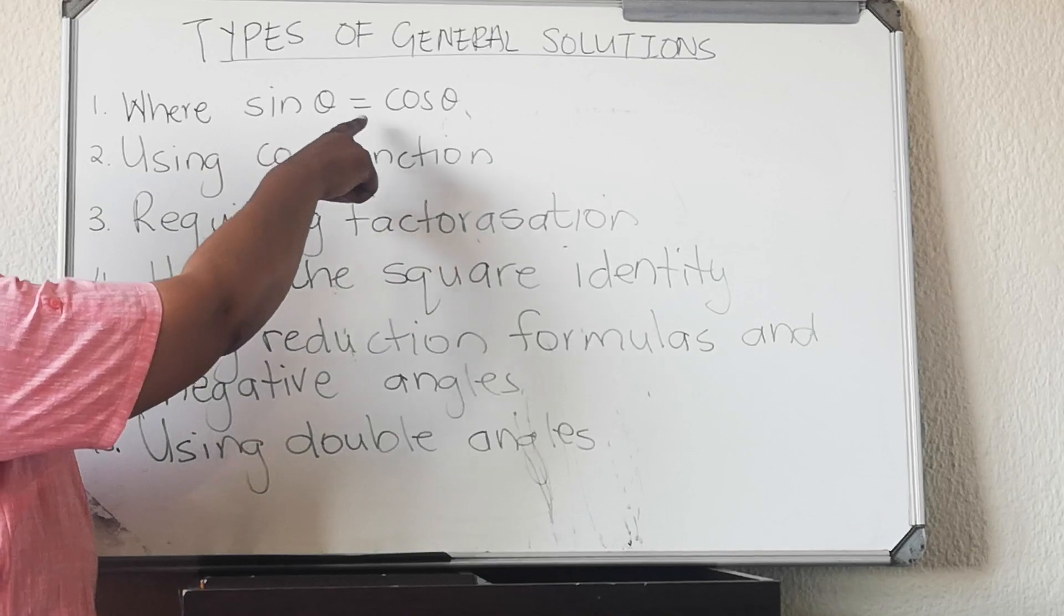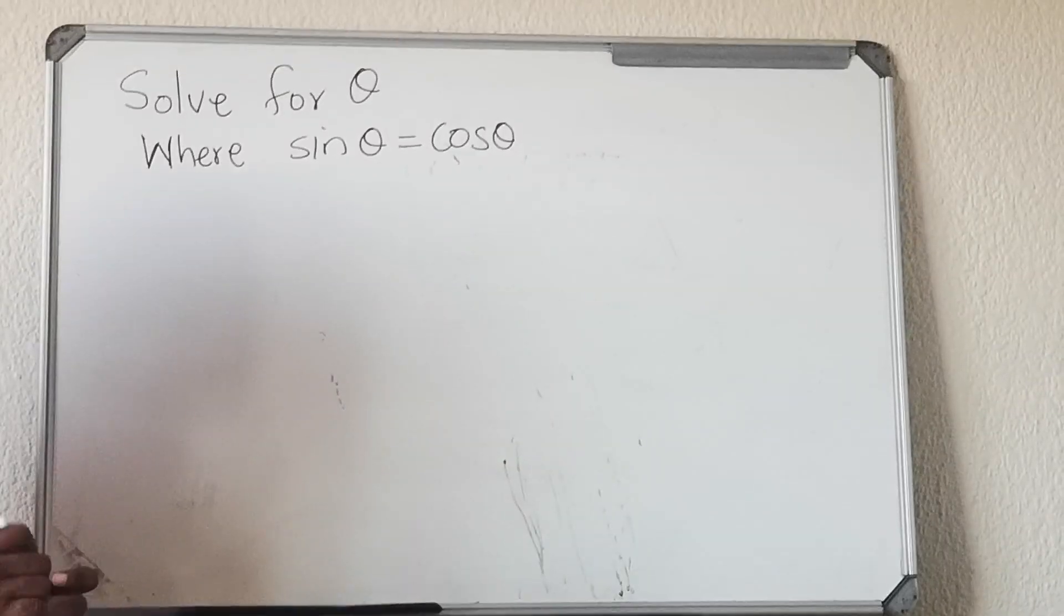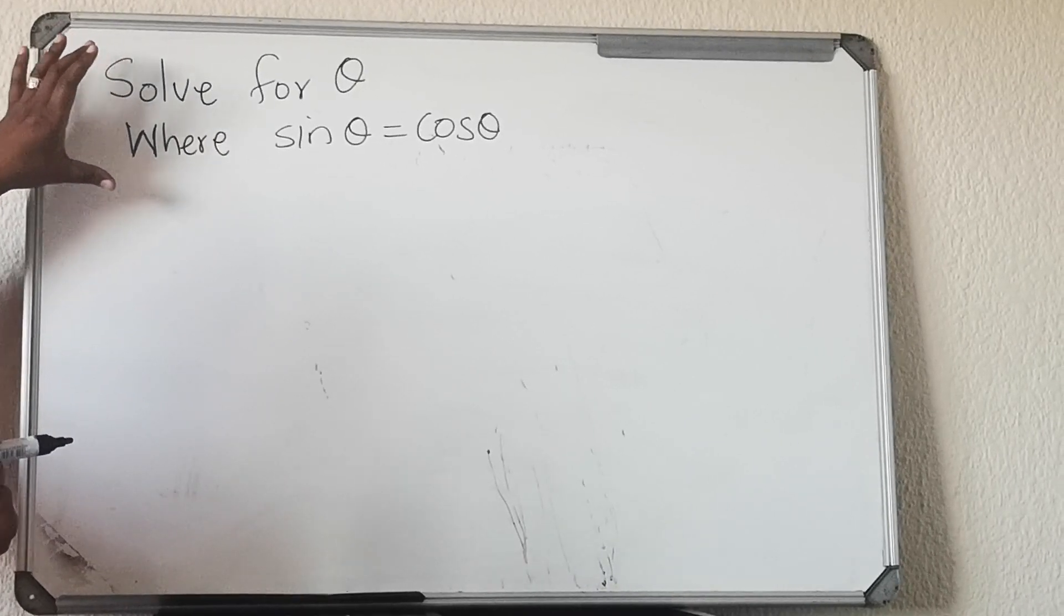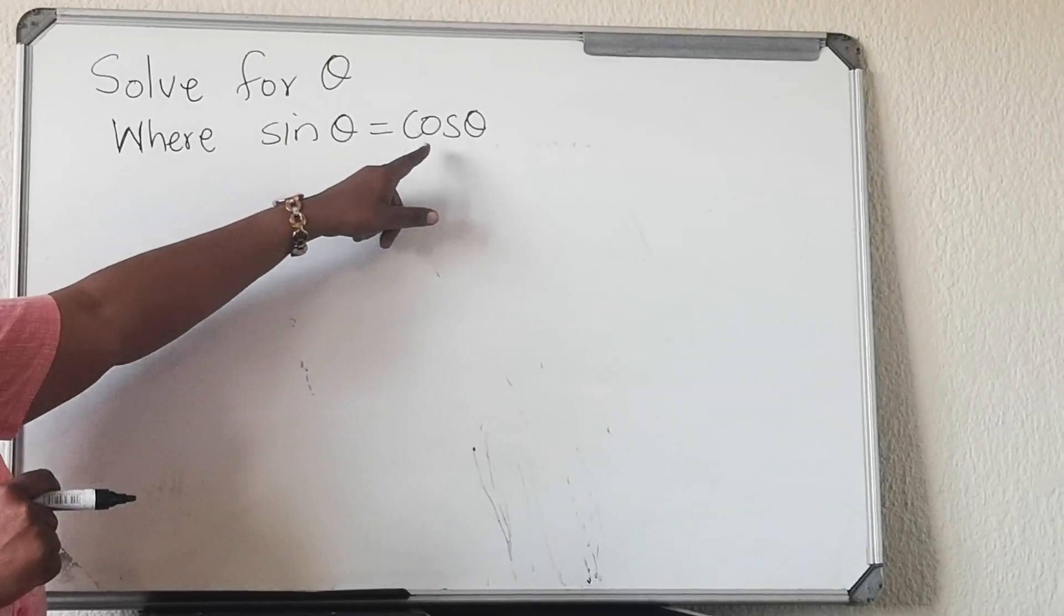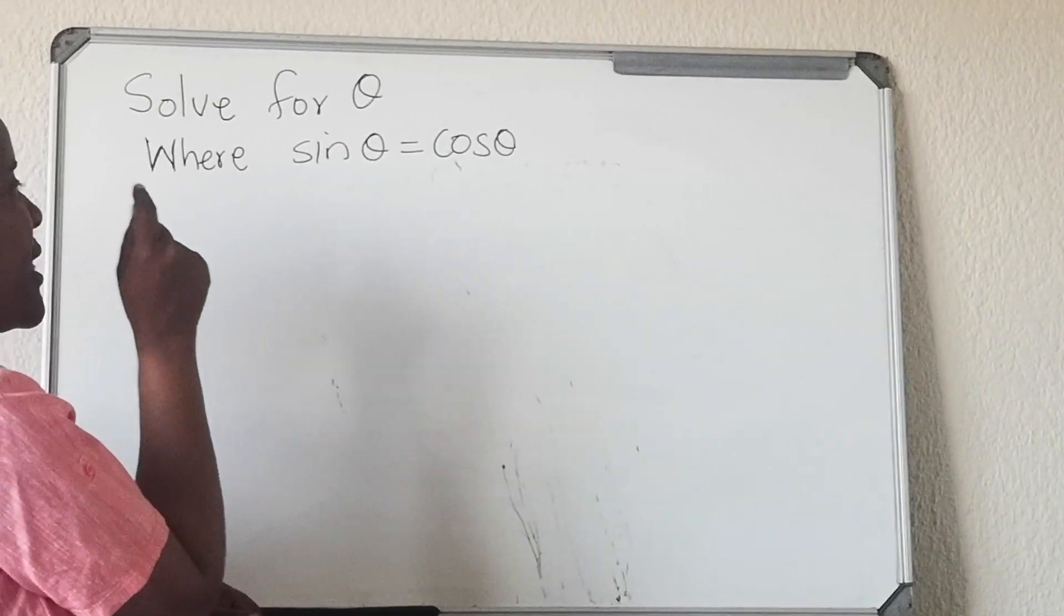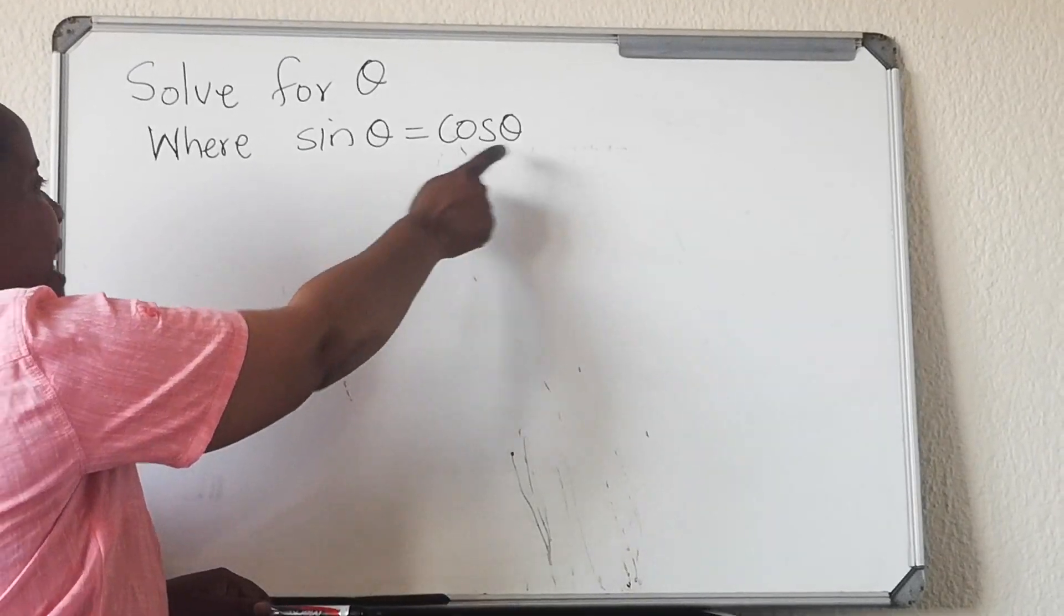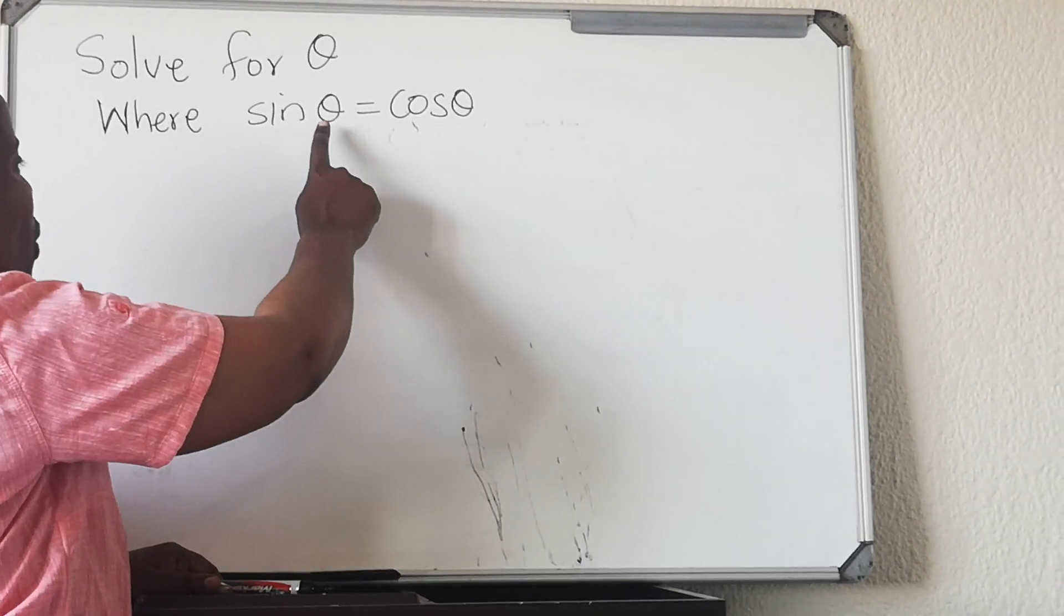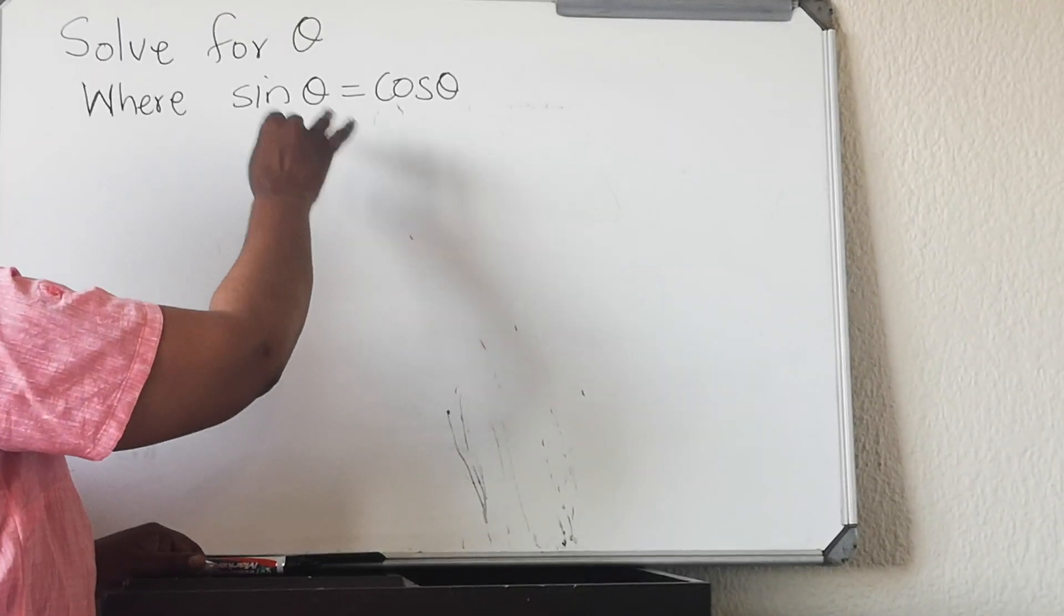So if you don't know which one it is, number one you need to know which ones there are, then you decide which one is it. We're going to start with the first one where sin θ equals cos θ. In a question paper they might ask you like this: solve for θ where sin θ equals cos θ. Now you need to spot: how do you see that it's the first one? With the first one you will have sin of an angle and cos of the same angle. If the angle is not the same then it's not this one.